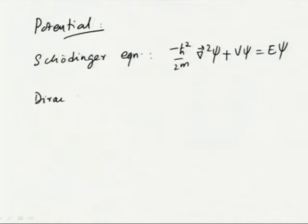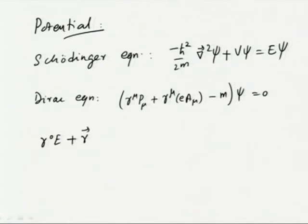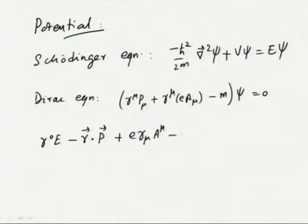The Dirac equation with the interaction term is (γ^μ P_μ plus e γ^μ A_μ minus m) ψ equal to zero. We will expand the first term: γ⁰ E minus γ · P, then plus e γ^μ A_μ minus m, applied to ψ, equal to zero.